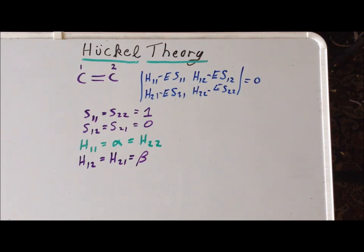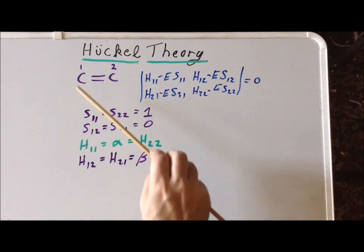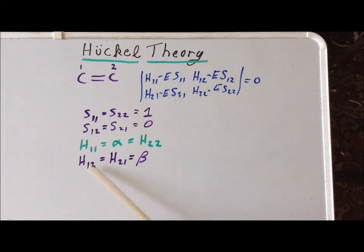If we had more atoms in the molecule and we're referring to the resonance integral between two atoms that are not connected, in that case, the integral will be set to the value of 0.